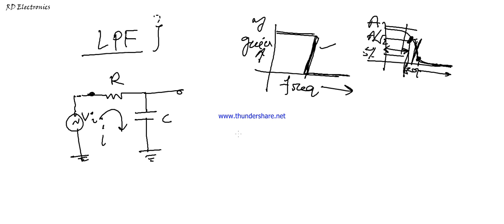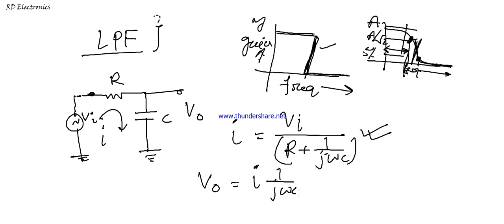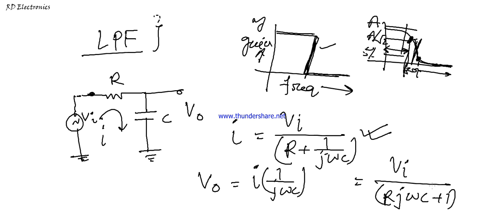First, we measure the current: I = V_input / (R + 1/jωC), where 1/jωC is the impedance or reactance of the capacitor. Now we measure the output voltage. By Ohm's law, V_output = I × (capacitor reactance) = I × (1/jωC). Substituting the value of I and after some mathematical derivation, we get: V₀ = V_input / (RjωC + 1).